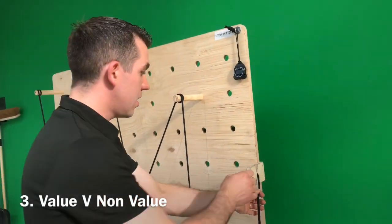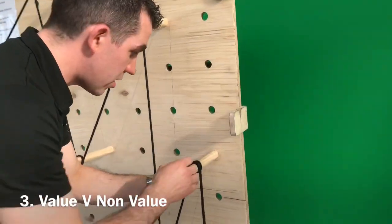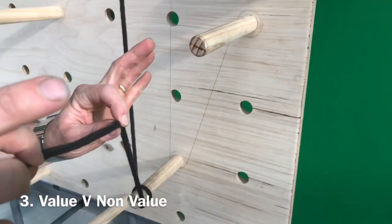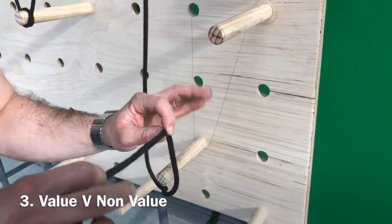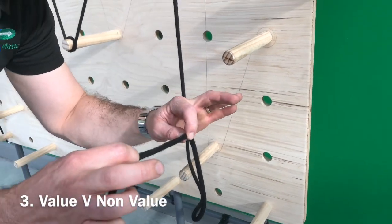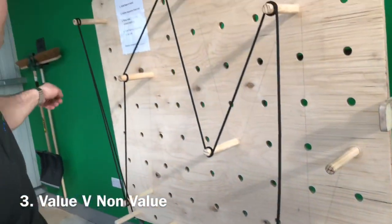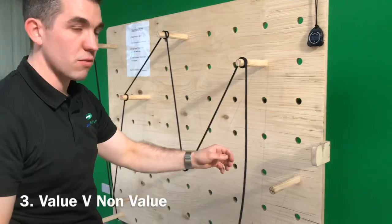So the key learning here again is that the value, if you come close here, the value is only the size, the length of rope that wraps around the peg. So if this is the amount of rope that wraps around the peg, and we have one, two, three, four, five, six, seven pegs.